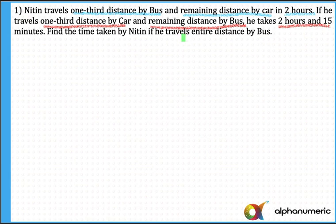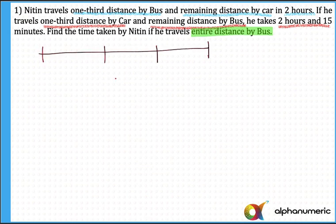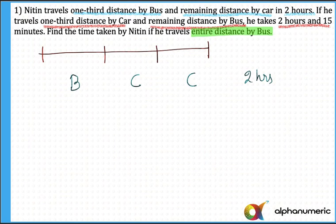Find the time taken by Nitin if he travels the entire distance by bus. Always make a habit of drawing a rough diagram for questions related to Time, Speed and Distance. I will divide the entire distance into three equal parts — one, two, and three. In the first case, Nitin travels one-third by bus, so the first part by bus and the remaining two parts by car, total time two hours. In the second case, one-third by car and two-thirds by bus — so two parts by bus and one part by car — and total time is two hours and 15 minutes.